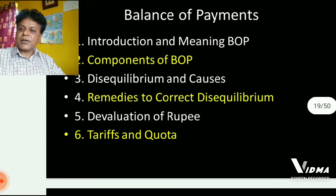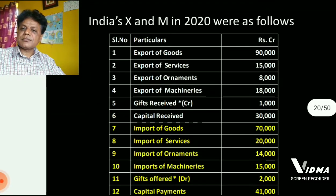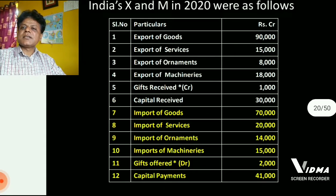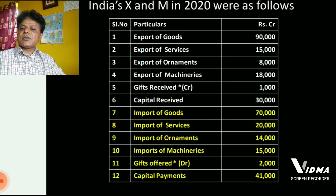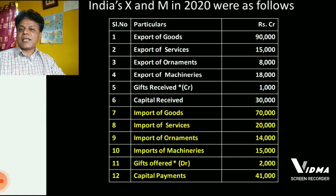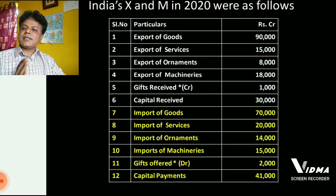In the next slide we have taken an example of our own country, its exports and imports in 2020. There is a table having three columns: first column serial number, second column particulars, and the last column rupees in crores. Exports of goods: rupees 90,000 crores; exports of services: 15,000 crores; exports of ornaments: rupees 8,000 crores; exports of machinery: rupees 18,000 crores. Gifts received: rupees 1,000 crores, and gifts received are written in the credit column of the current account.